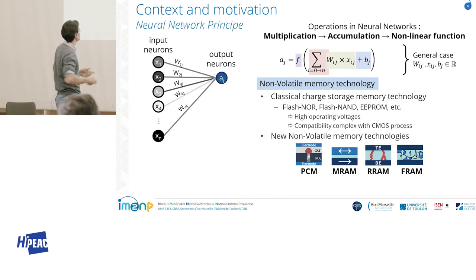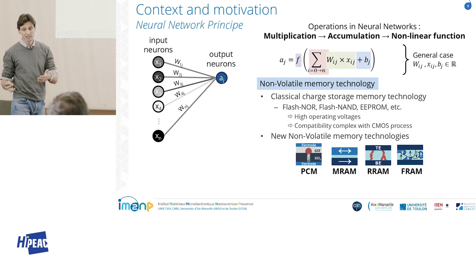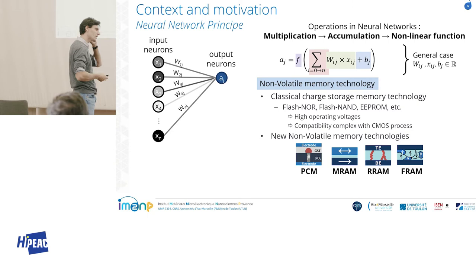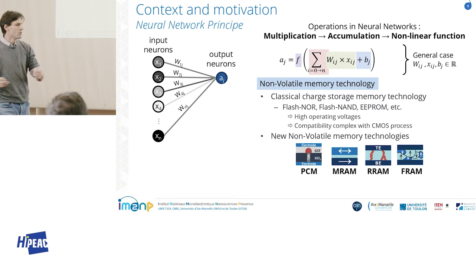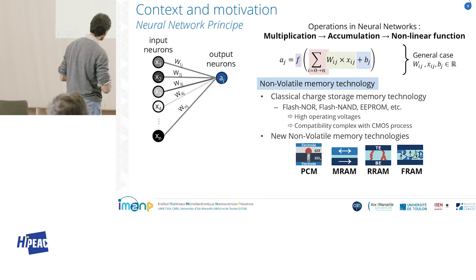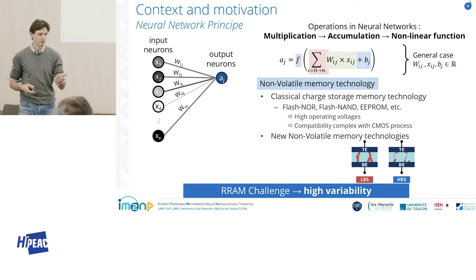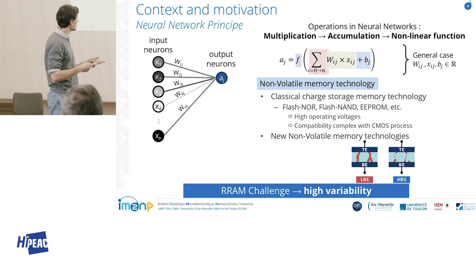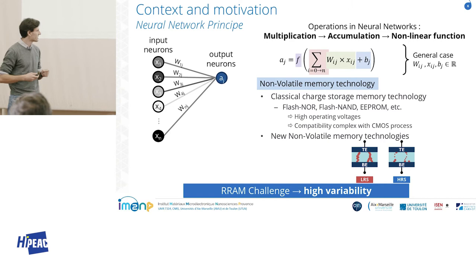We can use classical charge storage memory — Flash-NOR, Flash-NAND, EEPROM, etc. — but these technologies present high operating voltages and have complex compatibility with the CMOS process. Another approach is to use new non-volatile memory technologies such as PCM, MRAM, resistive RAM, or ferroelectric RAM, which have operating voltages and processes compatible with CMOS. In this work, we focus on resistive RAM because it is an interesting technology: fast, with high retention time and high endurance. The memory effect is based on the creation or destruction of a conductive filament, modifying the resistance of the device.